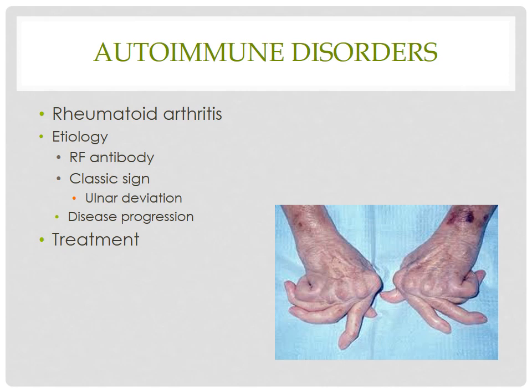Rheumatoid arthritis cannot be cured, like most autoimmune disorders. However, palliative measures can alleviate symptoms, including anti-inflammatory medications, analgesics, and biomodulators to control the disease. Corticosteroids can be used — typically not indicated for long-term use, but very helpful during times of exacerbation.